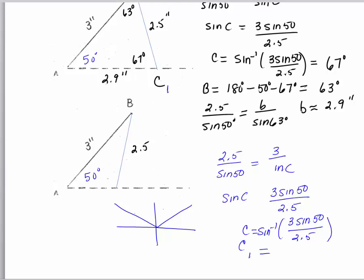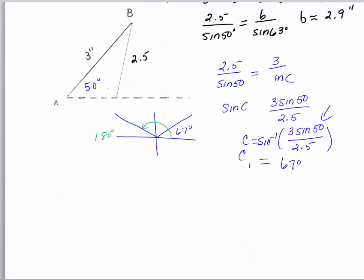C sub 1 is the acute angle, 67 degrees. But we know that sine is positive in the first and second quadrants. So the inverse sine of a positive value — the calculator will always give you the first quadrant angle. The second quadrant angle with the same trig ratio, you need to find yourself. To find this obtuse angle, we take 180 and subtract our reference angle of 67, giving us C sub 2 equal to 180 minus 67 degrees, which is 113 degrees.